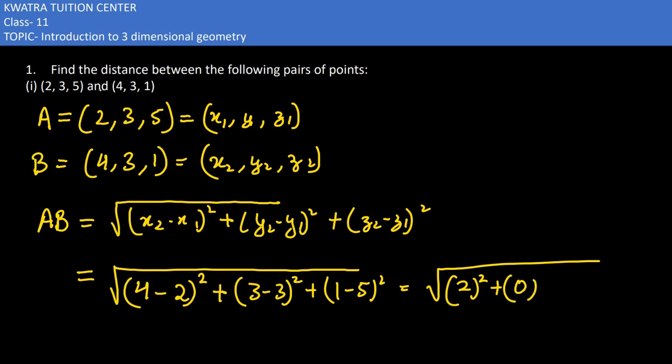3 minus 3 is 0 square. 1 minus 5 is minus 4 square. So 2 square we know is 4, 0 will be 0, and 4 will be positive 16. So you will get root 20 as the distance between A and B.